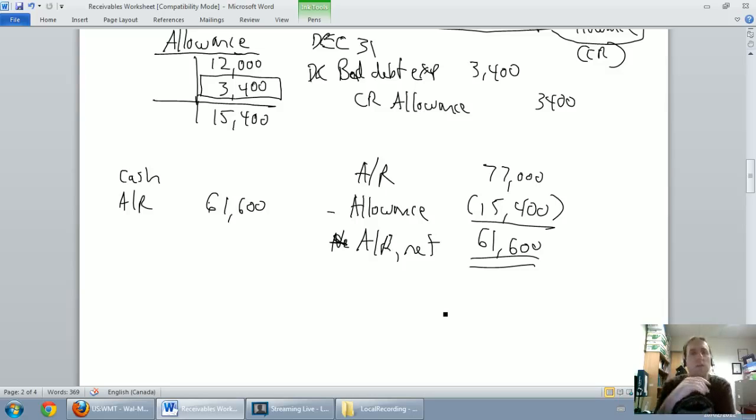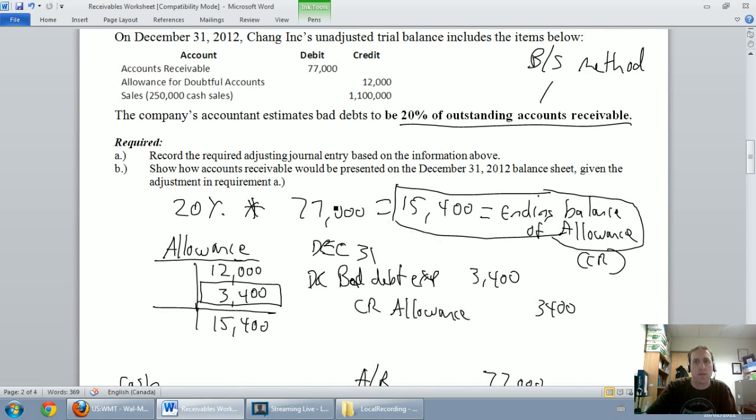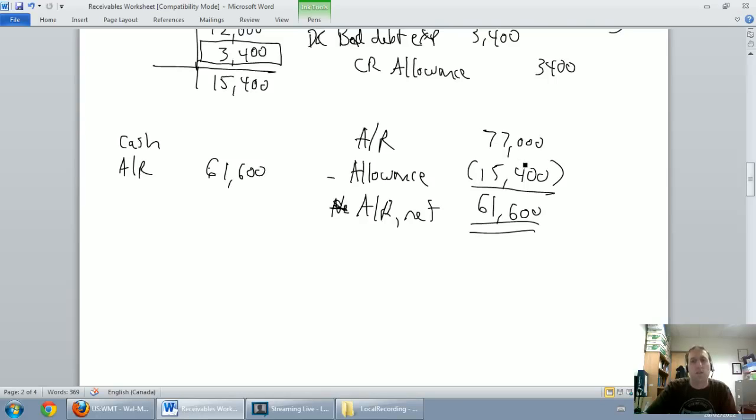So, again, the accounts receivable is the amount I'm legally owed. I'm owed $77,000. But I know if I have a lot of customers that owe me money, not everybody pays. Because of it, I need to set up an allowance for those customers that don't pay. In this case, based on my estimate, based on my manager's estimate of 20% of outstanding accounts receivable, based on that, I think $15,400 of these dollars aren't coming in.